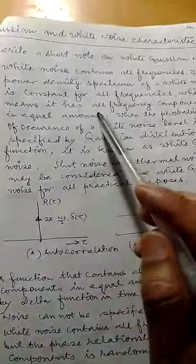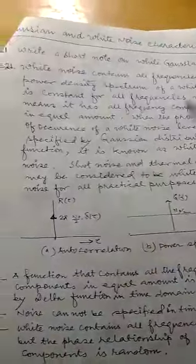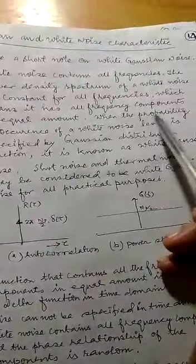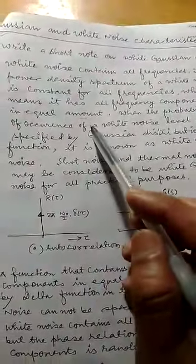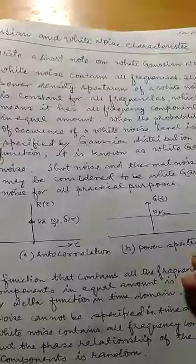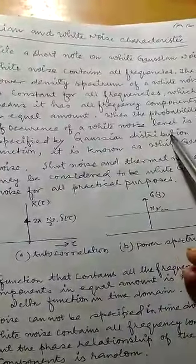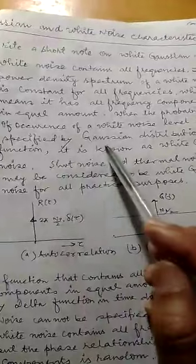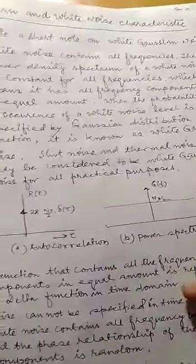...is constant for all frequencies, which means it has all frequency components in equal amount. When the probability of occurrence of a white noise level is specified by Gaussian distribution, then it is known as white Gaussian noise.